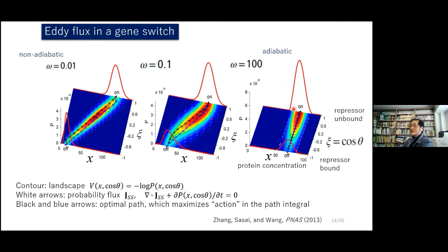When omega is large in the adiabatic case, we do not have distinct circulating flux. Everything looks one-dimensional — the forward and backward optimal paths almost overlap, so we can use the analogy of equilibrium statistical mechanics. But when omega becomes smaller, we have distinct circular flow and everything becomes non-equilibrium.